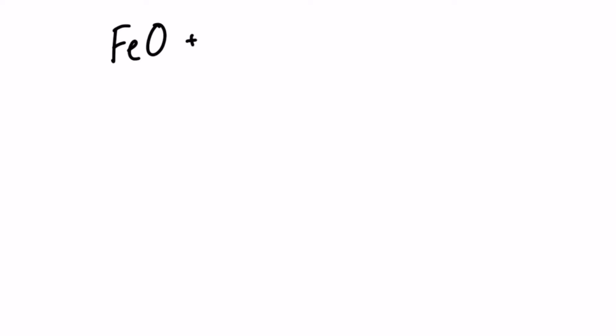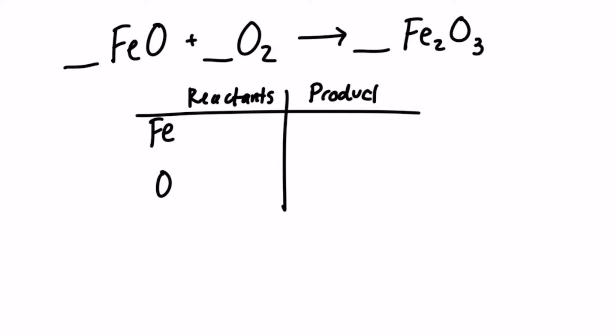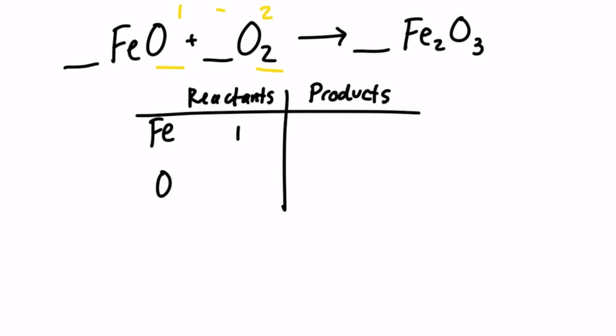We have FeO plus O2 yields Fe2O3. Since iron, or Fe, in the reactant doesn't have any subscript, there's a one. Oxygen is in two places in the reactant, so we make sure we count all of the oxygen together every time we count the total for the reactant side. We have one oxygen attached to that iron atom, and then we have two oxygens by itself. One plus two is three. In the product, I just look at the subscript, so I have two iron and three oxygen in the product.